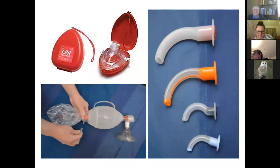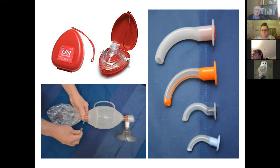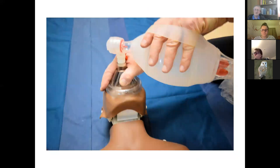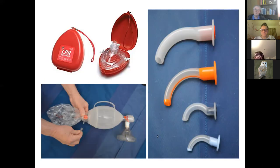Guedel airways are those little hook-shaped devices — you place them into the mouth sideways in the appropriate size (ranging from babies up to large adults). Once inserted they keep the airway open so you can use a bag valve mask or pocket mask much more easily, without the danger of the airway falling back. There's also the laryngeal mask — sometimes called an i-gel — which fits over the back of the mouth and is made of flexible silicone.